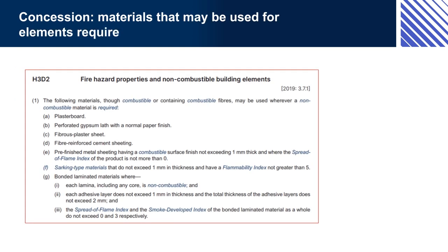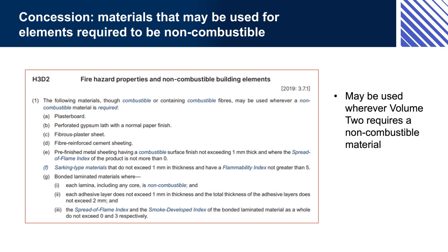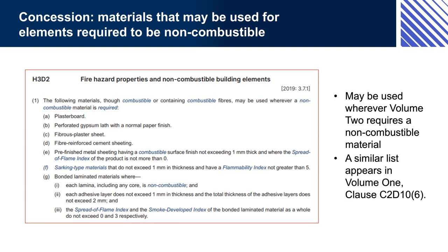Concession: Materials that may be used for elements required to be non-combustible. These may be used wherever Volume 2 requires a non-combustible material. A similar list appears in Volume 1, Clause C2D10.6.